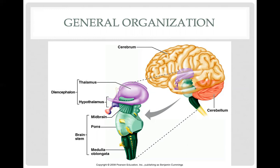The diencephalon also has another structure called the epithalamus, which I'll briefly mention later. Coming off of the hypothalamus, you have a small gland — part of it is an extension of the hypothalamus and the other part is a separate gland — referred to as the pituitary gland, broken down into the anterior pituitary and the posterior pituitary. You'll learn more about this gland when you study the endocrine system. Coming off of the brain, you have what we identify as the brain stem, depicted in green.